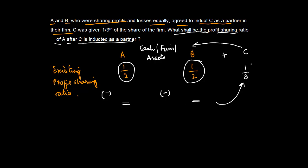In this question what has happened is that we know that C has received one third, but we don't know how much is given by A and how much is given by B. So in such cases what do we do?